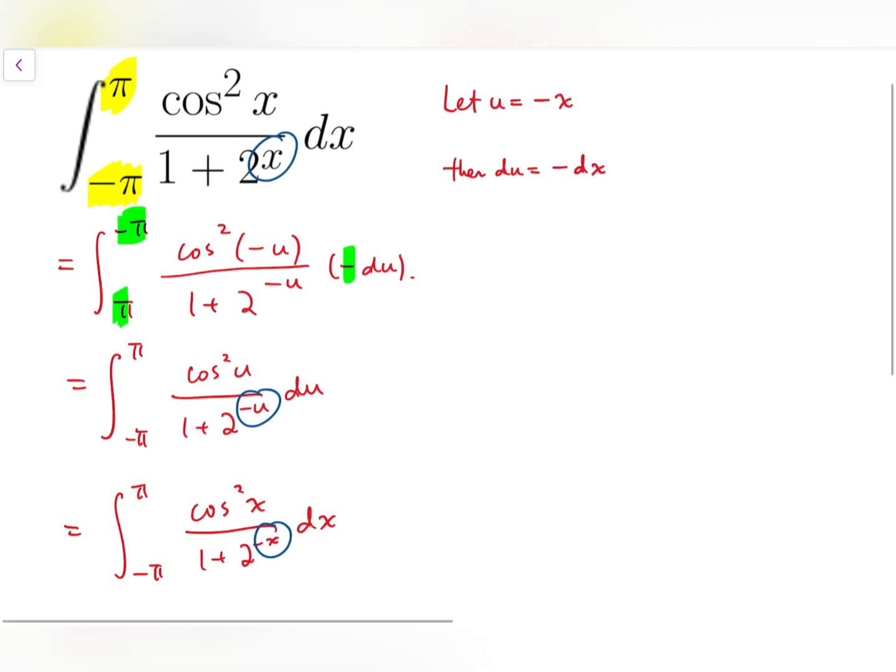So now at this point, I can let I be the original integral, and so we have two ways to write I. One way is cos squared over 1 plus 2 to the power x, and the other will be cos squared over 1 plus 2 to the power minus x. So I'm now going to add them together, and so we will have 2I.